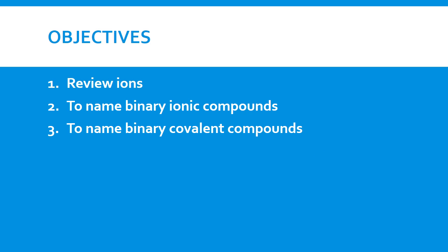The objectives for today will be to review ions, to name binary ionic compounds, and to name binary covalent compounds. So we'll also look at what is an ionic compound and what is a covalent compound.